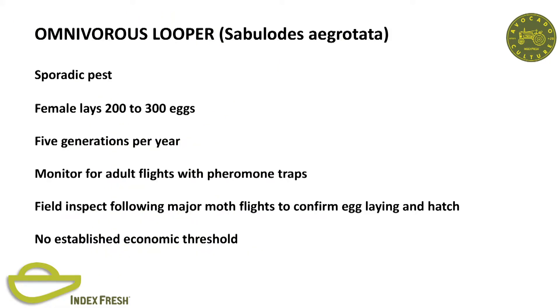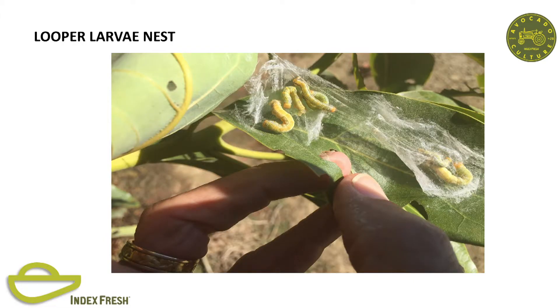Omnivorous looper is a sporadic pest with multiple generations—you monitor the flights with pheromone traps. Field inspect to confirm: if you had a flight of 300 moths in one week, does that mean you've got trouble? You need to go out and ground truth it. Moths will fly during periods when the avocado trees aren't flushing, so you get a flight, they're laying eggs, the eggs hatch, the little worms need tender leaf flesh to feed on, and you get what we call in the industry a suicidal emergence—which means you don't have to treat. There's no established threshold in the literature; it's sort of a by-feel approach.